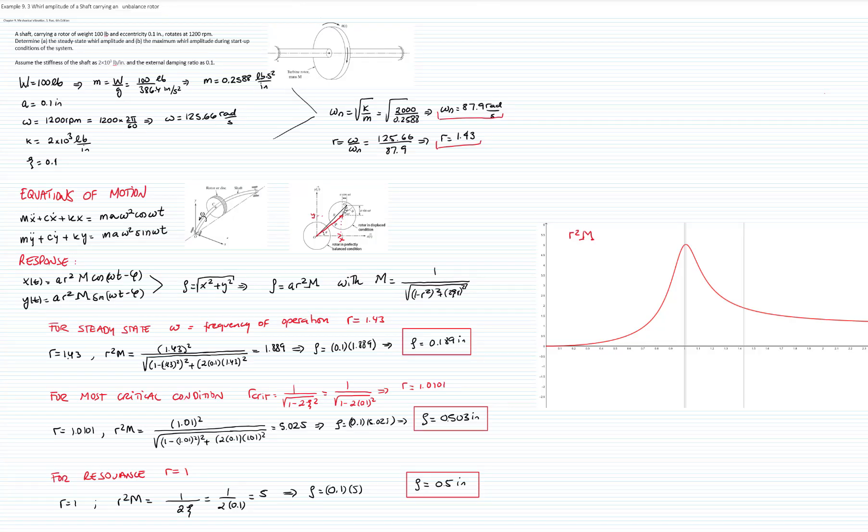If we have the graph for r² M for ζ equals 0.1, this is how it looks like. I draw some vertical lines that represent r equals 1, r equals 1.01, which is the most critical condition, and r at operation frequency, which is 1.43. So as you see, the most critical condition is right here, and that's where the maximum deflection of the shaft occurs. And that's usually the machine goes through that condition, and then in the operation condition, the amplitude is much smaller.